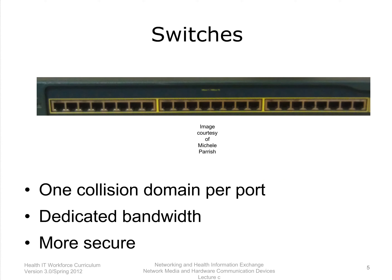With switches, each device has its own connection to a port on the switch. Each port is a collision domain, so a switch with four active ports would have four collision domains. If there is 10 megabits per second coming into the switch, then each port has 10 megabits per second. Switches have a switching, or MAC, table — a table that associates the MAC address of the device connected to the port with the port number. If a packet is destined for a particular device or MAC, then that packet will only be sent to the port associated with that MAC. This is a more secure form of data transmission, not susceptible to the same type of packet sniffing issue we had with hubs.